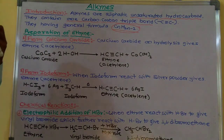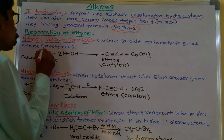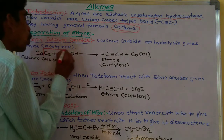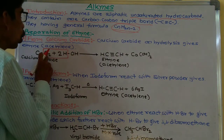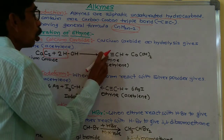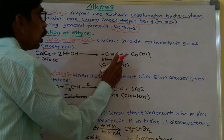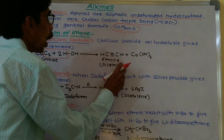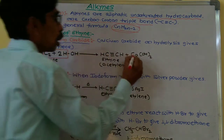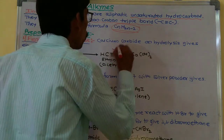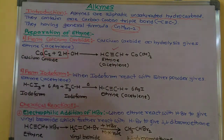CaC2 carbide on hydrolysis produces acetylene. The two carbide and two H combine to form ethyne, which is commonly called acetylene. The remaining product is calcium hydroxide. So this is the first method for the preparation of ethyne — the hydrolysis of calcium carbide.